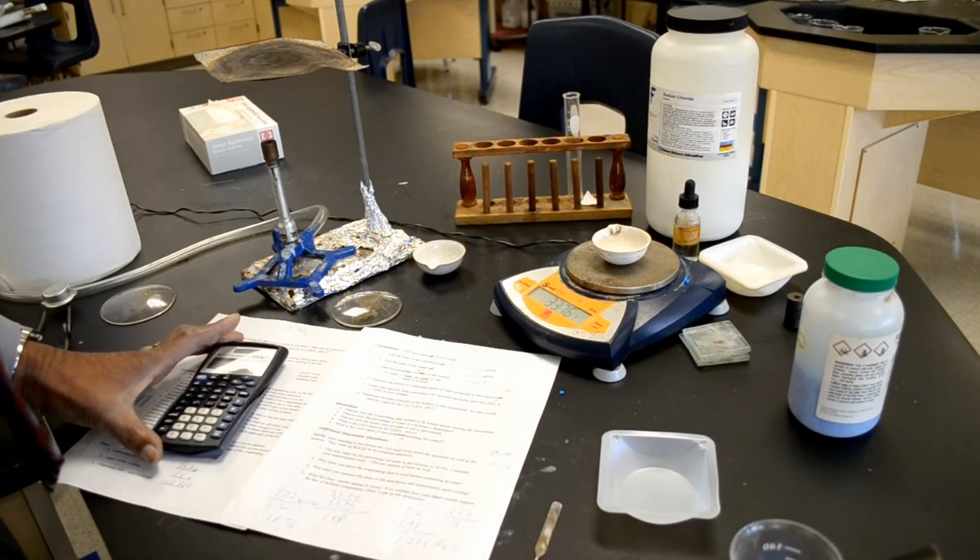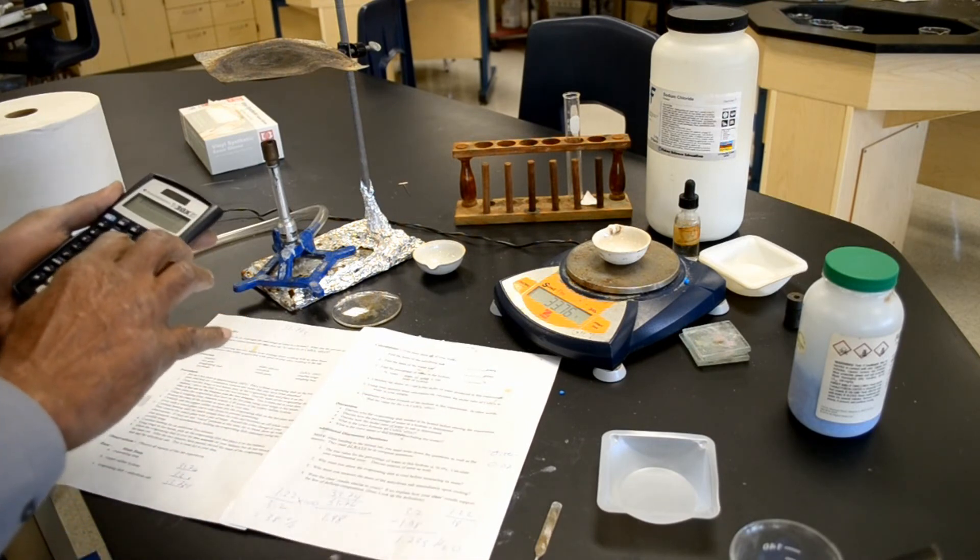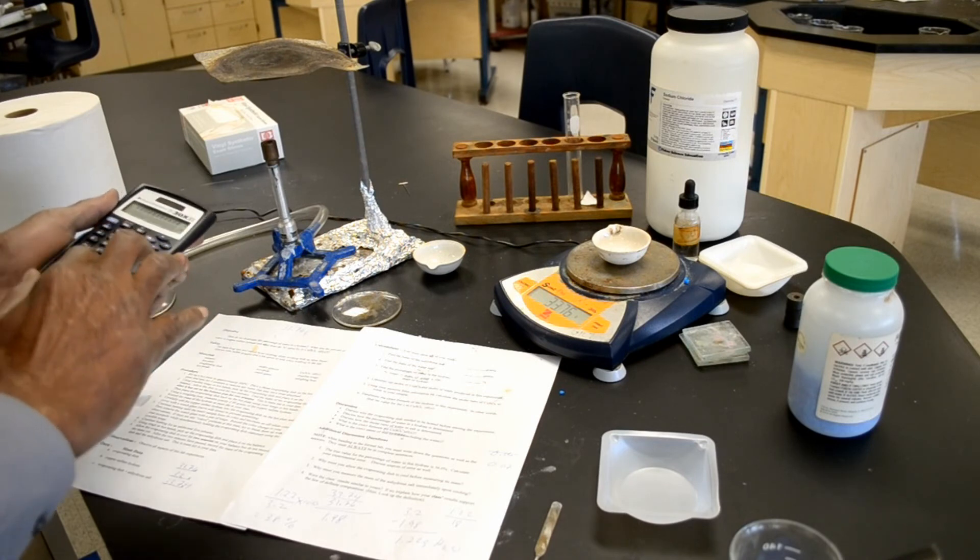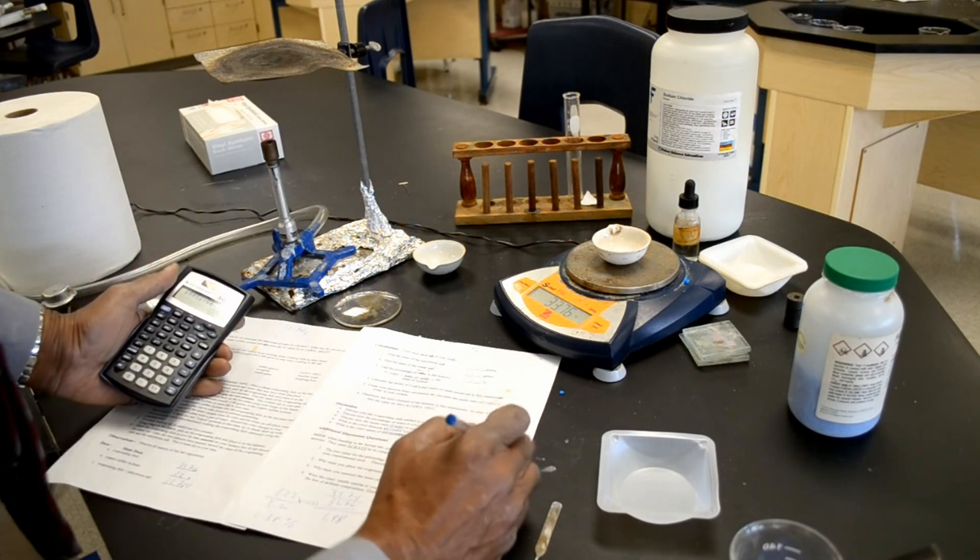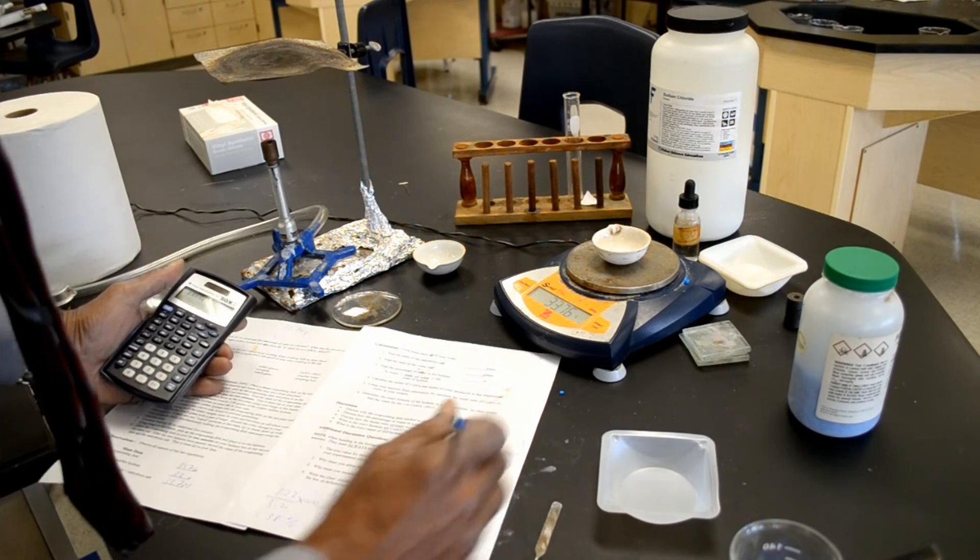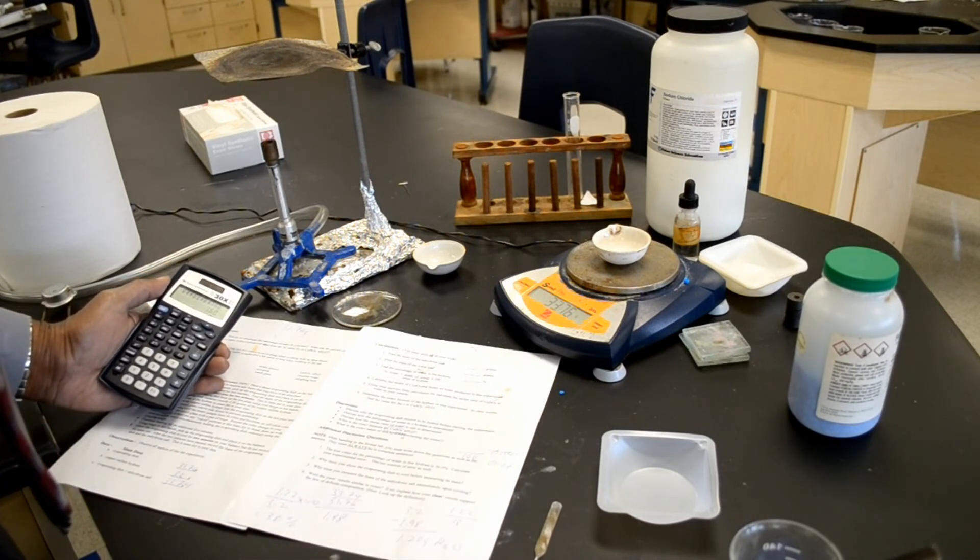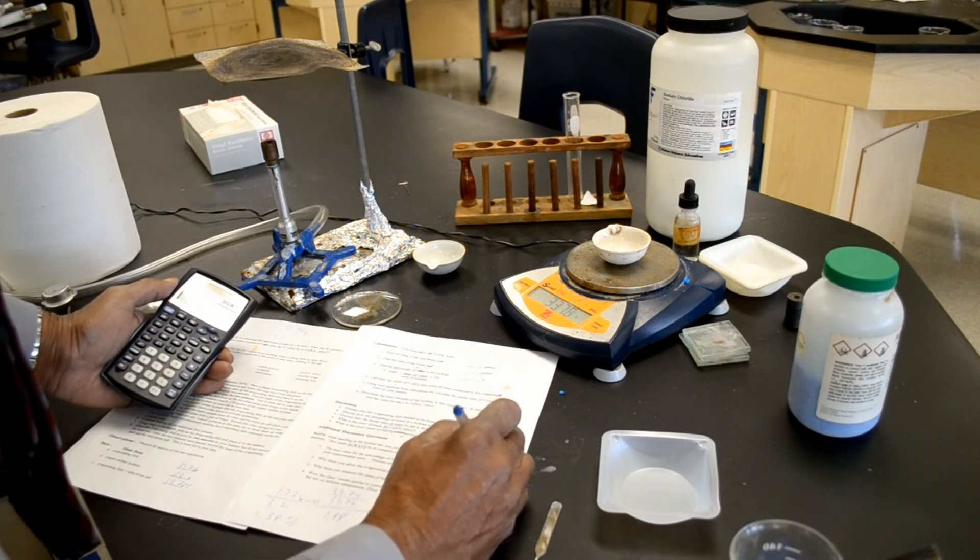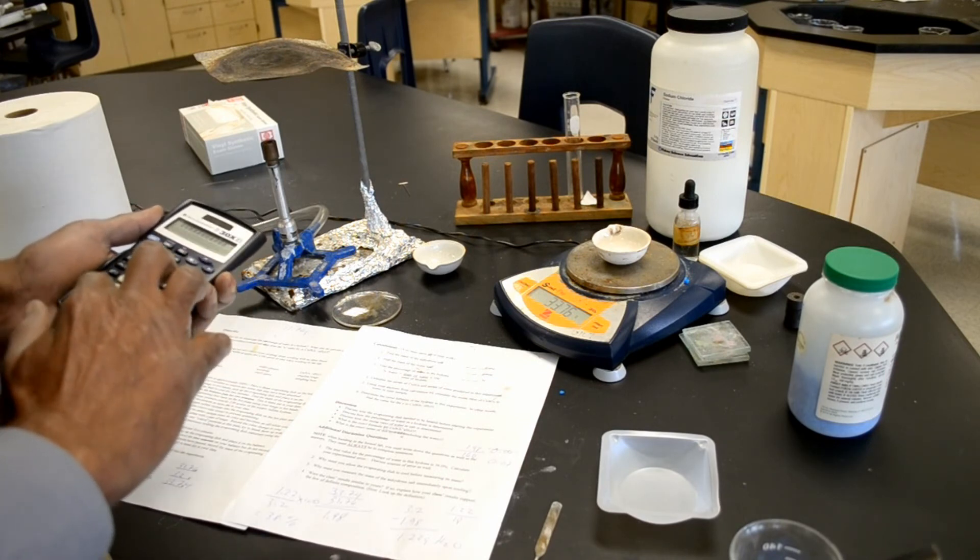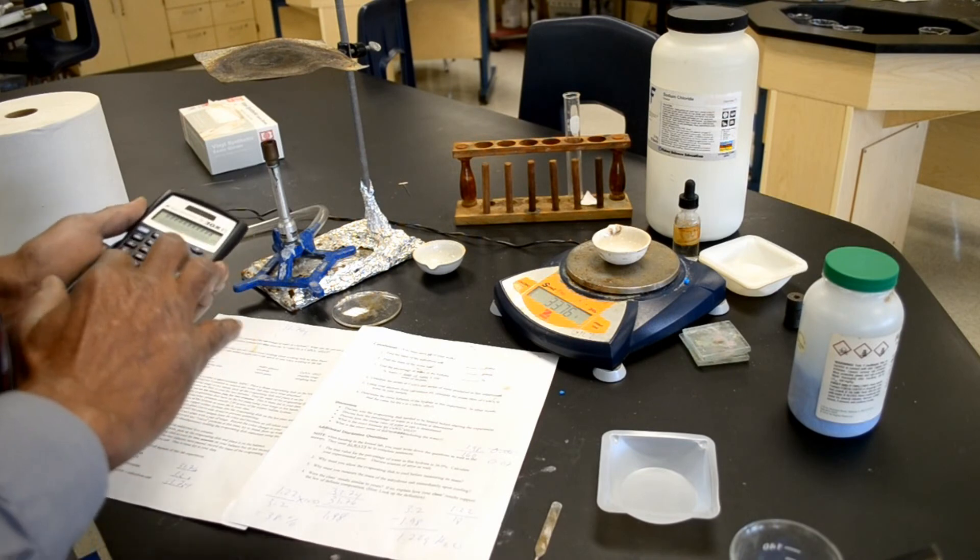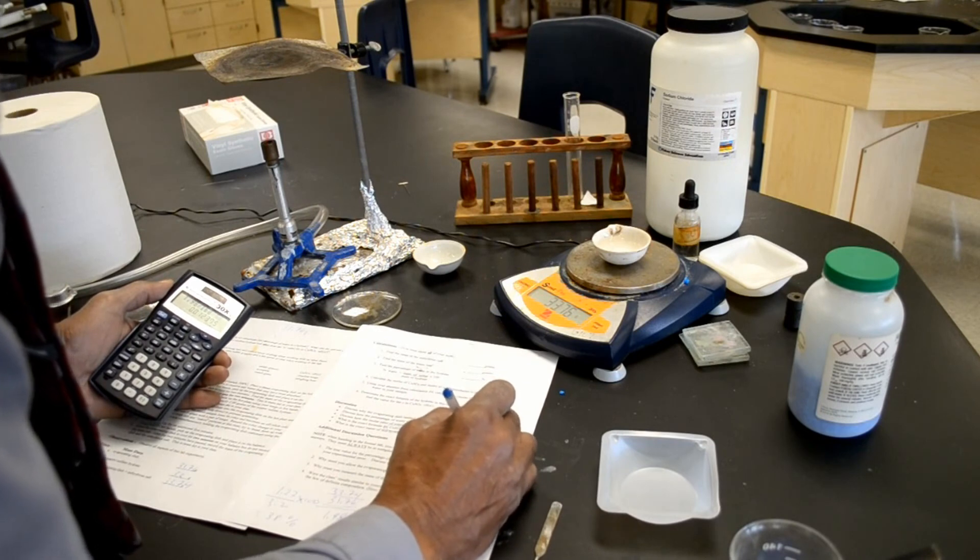Now, I have to find the mass of the anhydrous salt. So, 64 plus 32 plus 64 is equal to 160. So, now I have to divide the mass of the anhydrous salt, which was 1.98 by 160. 1.98 divided by 160 equals 0.012.